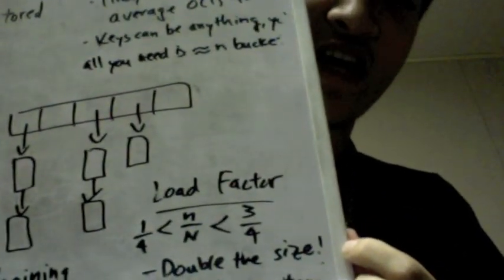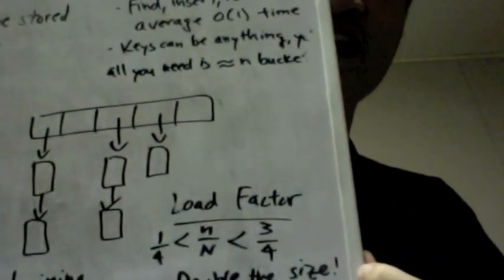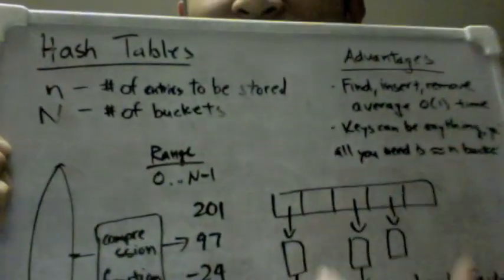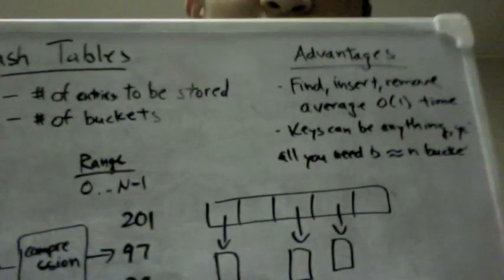And so you want it to be between 1 quarter and 3 quarters. And if your load factor exceeds that, of course you should double the size. And after doubling the size, you'll have a new compression function that maps to double the size. So from 0 to 2n-1.